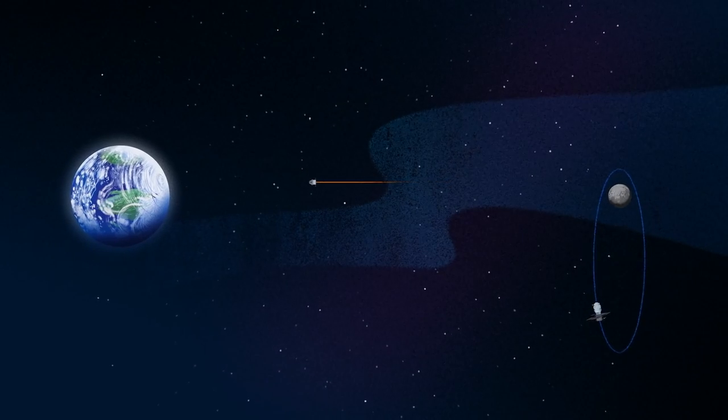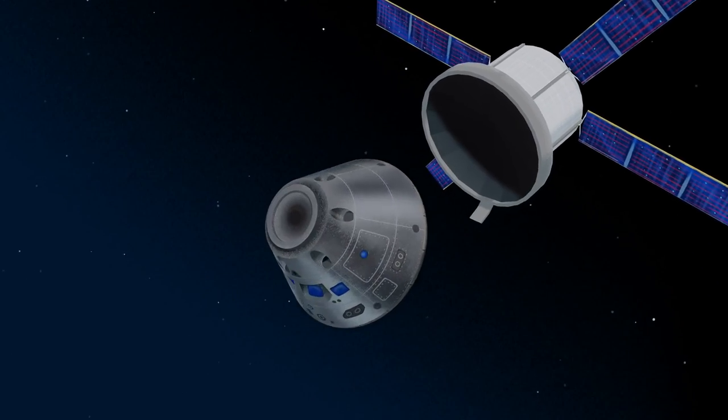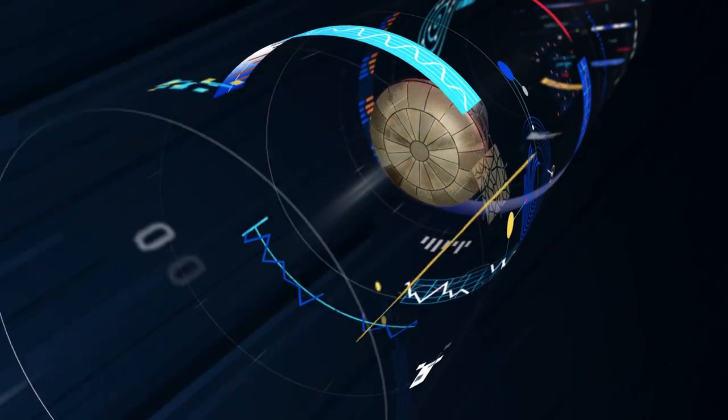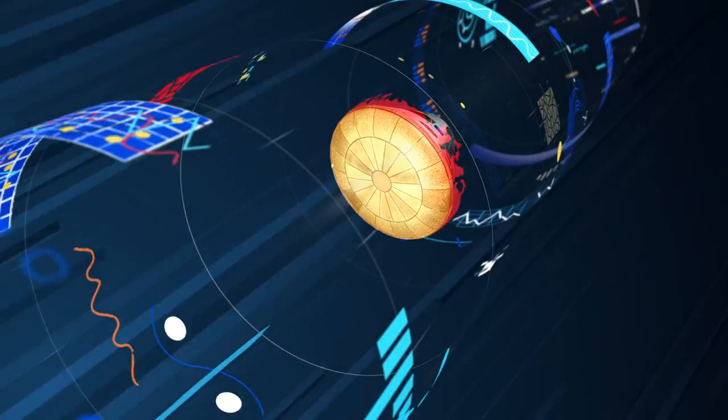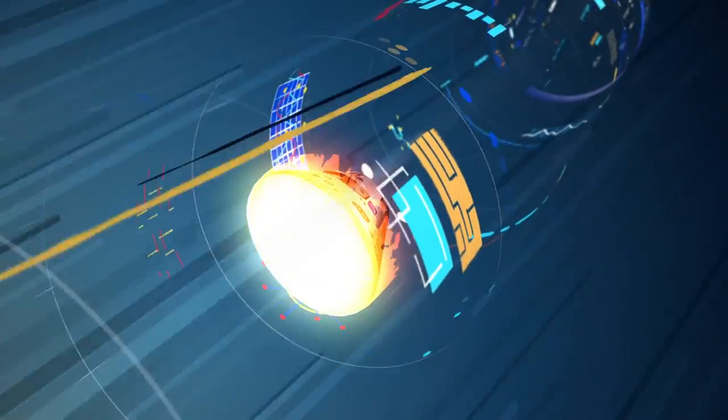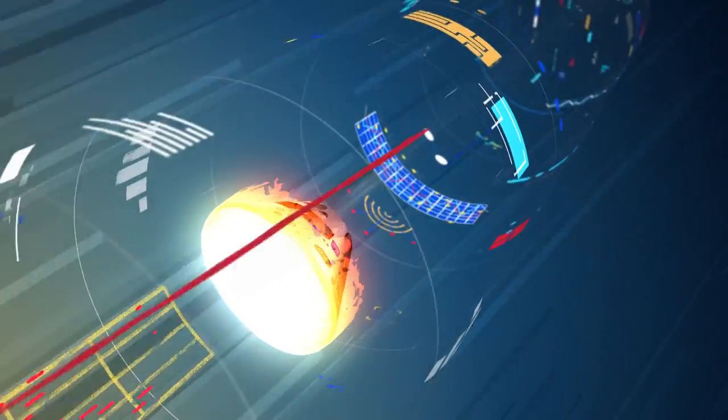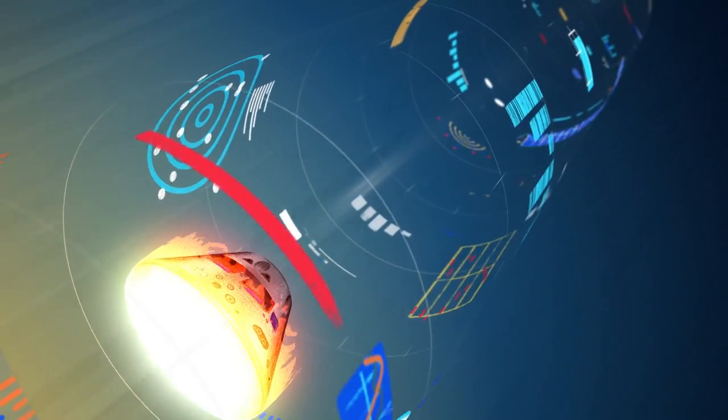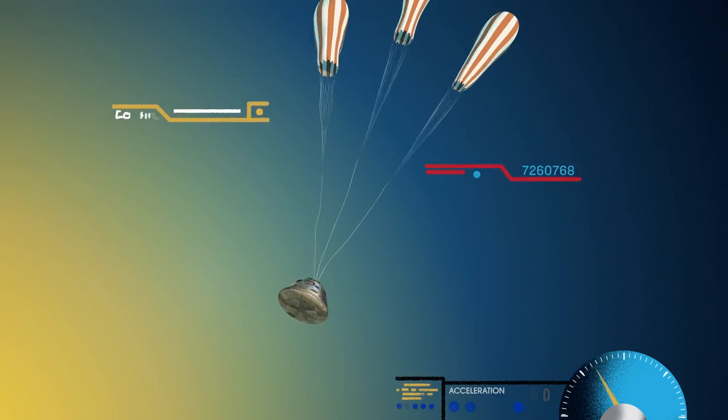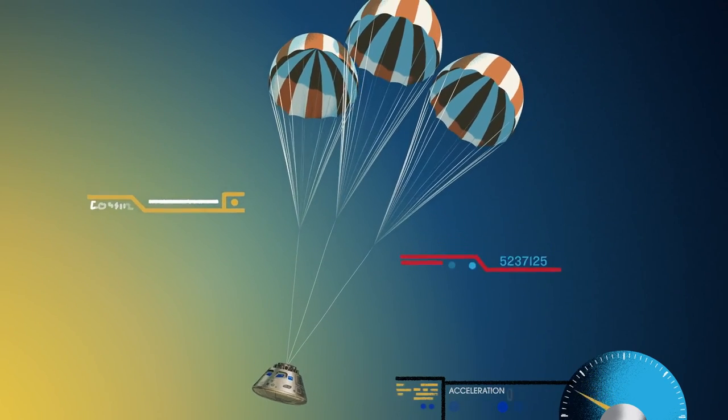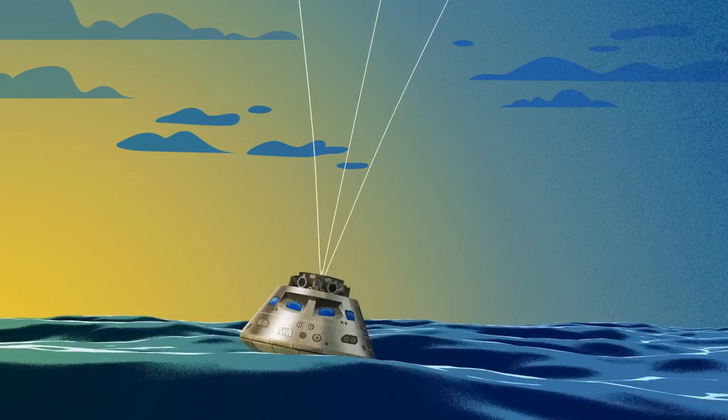As they near the end of this journey, the service module is released, and the crew module is oriented heat shield first. Entering Earth's atmosphere at 25,000 miles per hour, the friction of air slows Orion considerably, while also subjecting it to temperatures of 5,000 degrees. With the Orion now at just 300 miles per hour, a series of parachutes uniquely tested and produced for this moment deploy, decelerating the craft to just 20 miles per hour for splashdown.